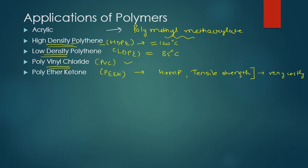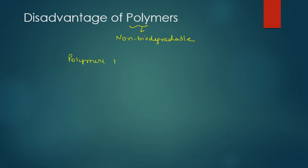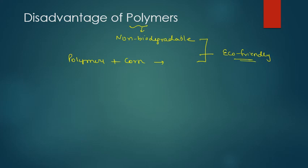There are some environmental complications associated with polymers. They are basically non-biodegradable substances, so they take many years to degrade. Some companies mix cornstarch with them to help break them down a little sooner, but we need to develop more eco-friendly products to avoid complications to the environment.